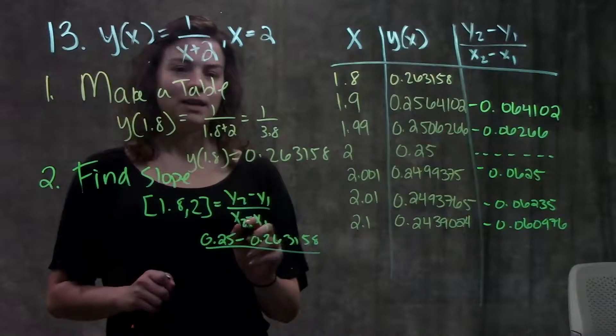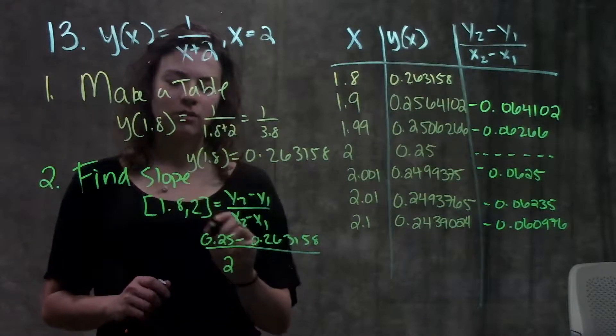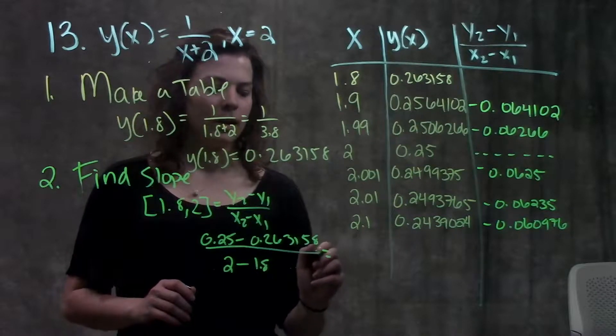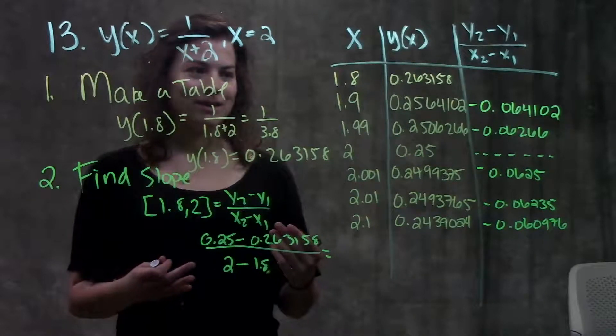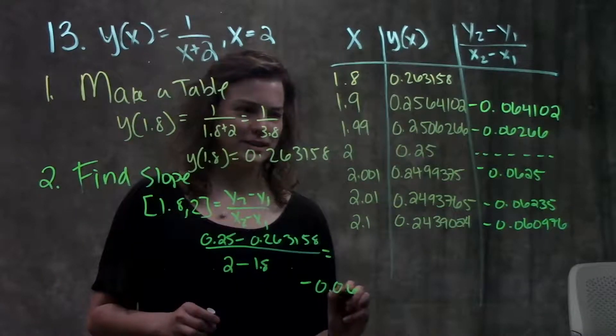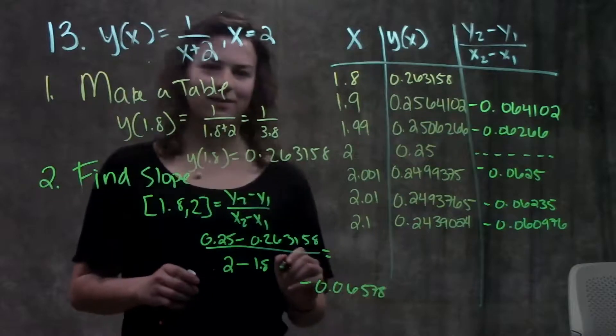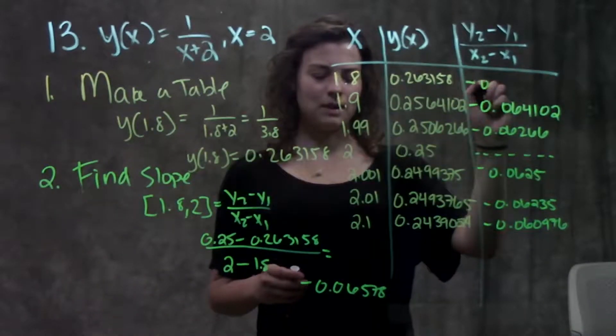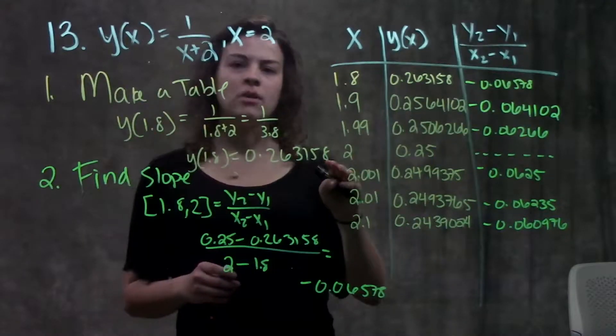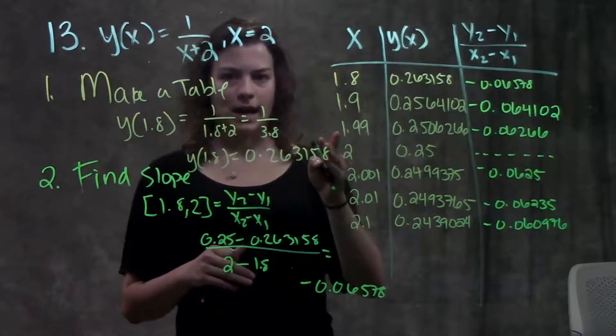So here's my difference in the y's at the top, difference in the x's. I plugged in 2 for my x2, and my x1 was 1.8. I'm going to wow you with my mental math again. This slope is equal to negative 0.06578. So I go put that in my table, and I can repeat that same process for each x value going from both the left hand side and the right hand side.